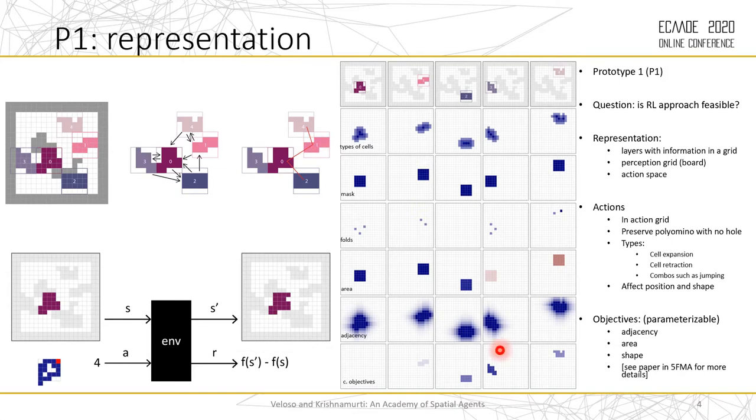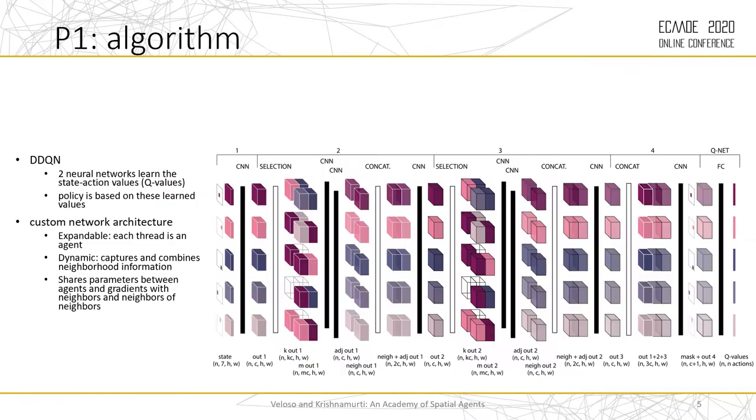We combine these objectives using a function. The difference between the value of that function between two time steps is used as a reward signal. In terms of learning algorithm, you can see more details in the paper. We use double deep Q network, and we developed a custom neural network for our problem.